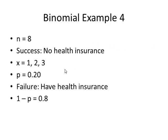n is eight, x is one, two, or three, and p is 0.2. If you're doing this one by hand, since we have an interval of values, we plug in all three of these and add up their probabilities. This works out to be 0.7759.